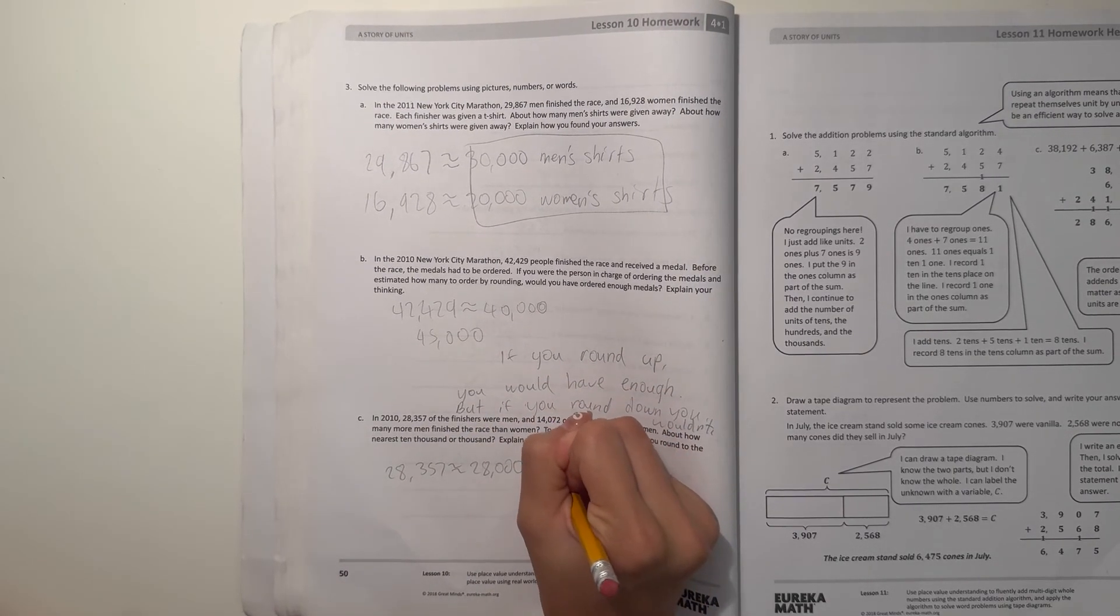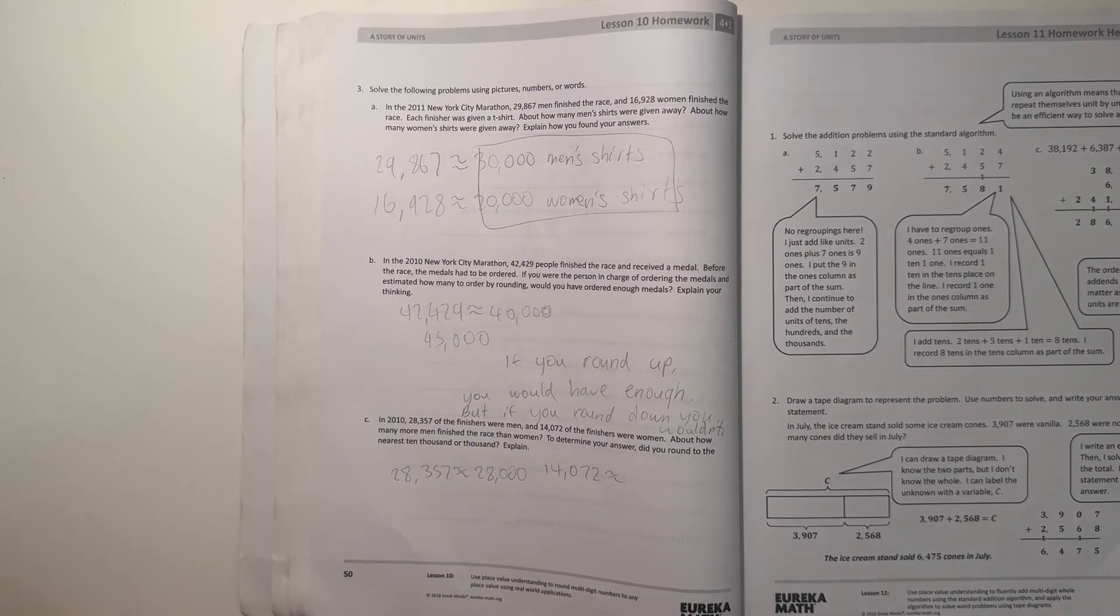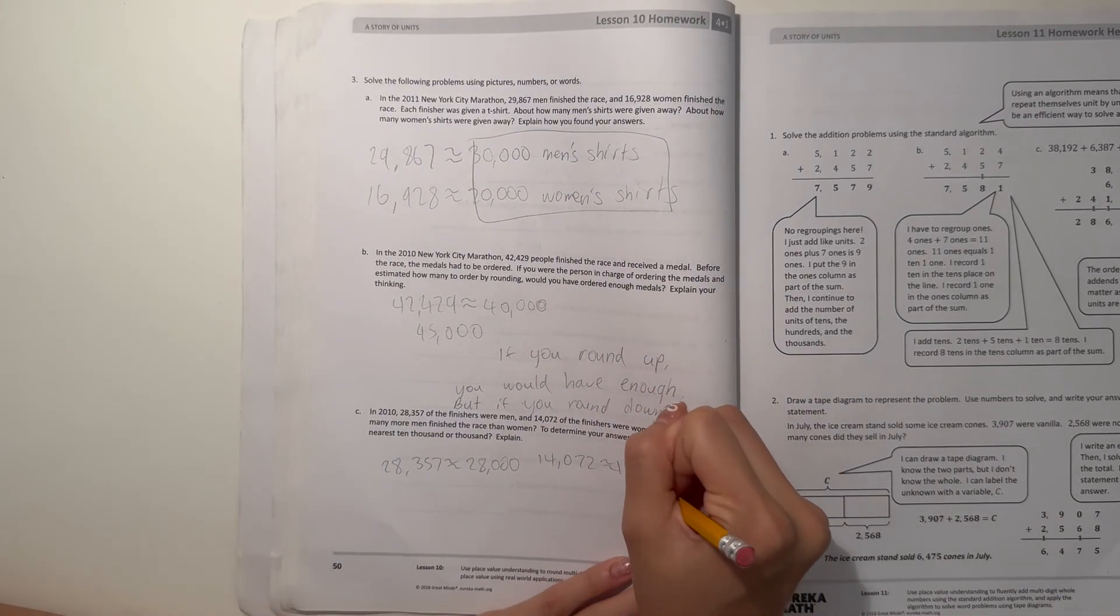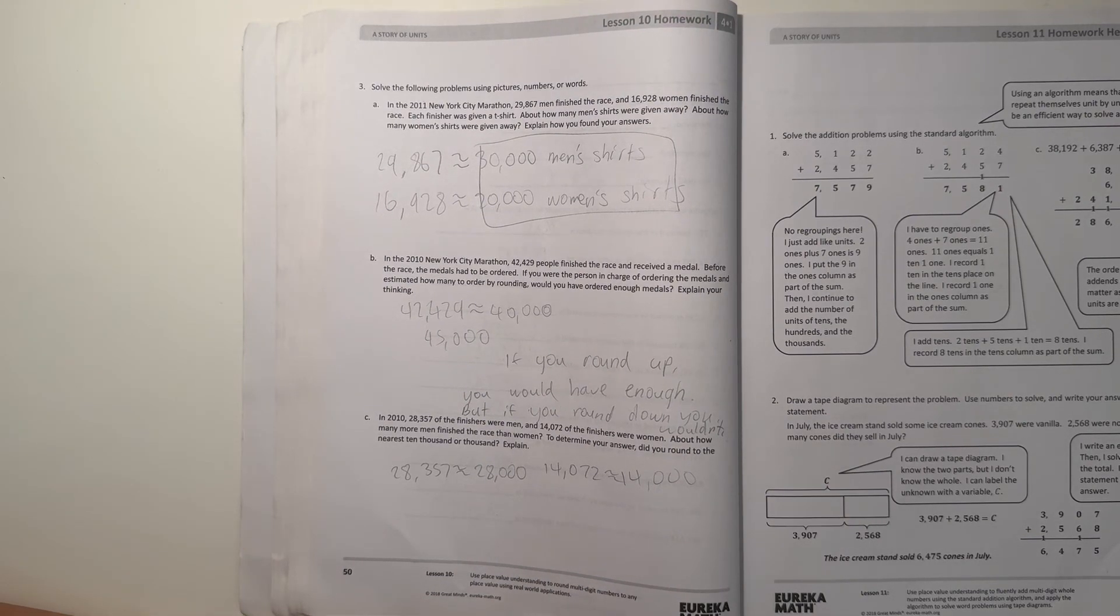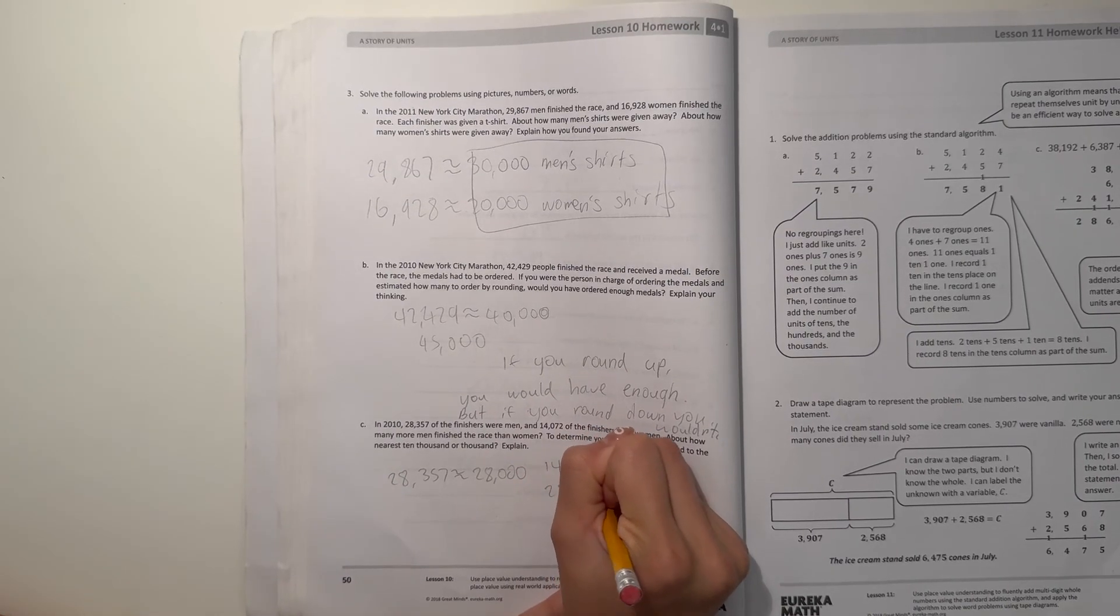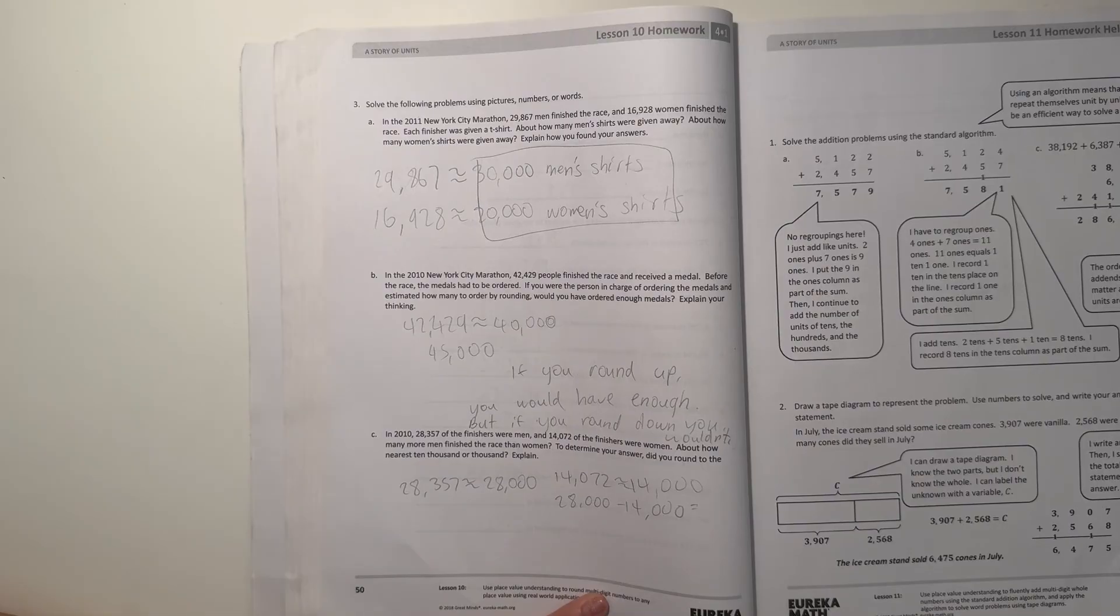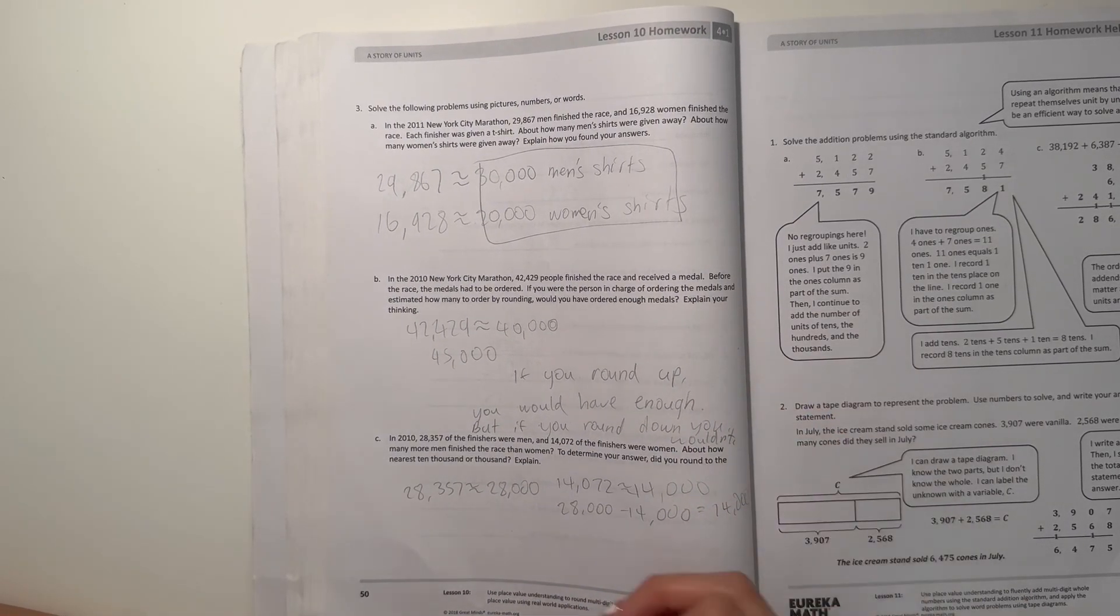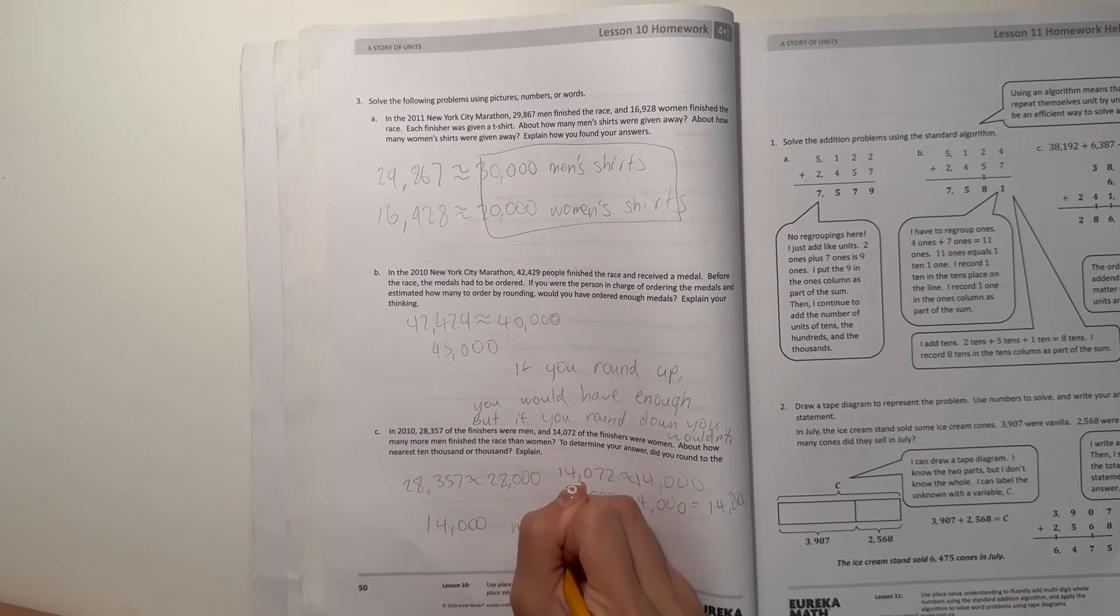And then we have 14,072 to the nearest thousand, we would round it to 14,000. So then how many more men finished than women? Well 28,000 minus 14,000 is 14,000. So 14,000 more men.